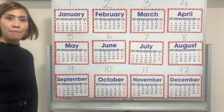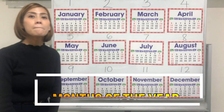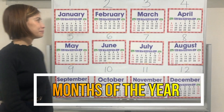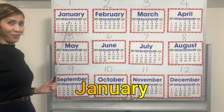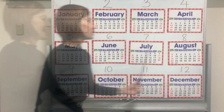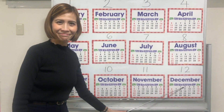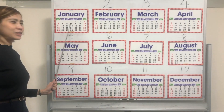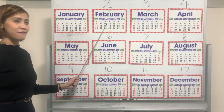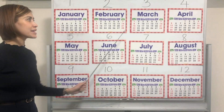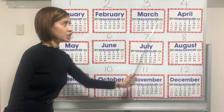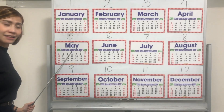1, 2, 3, 4, 5, 6, 7, 9, 10, 11, 12. Now, let's learn about months of the year from January through December. Okay, let's sing. January, February, March, April, May.